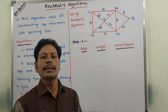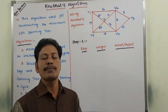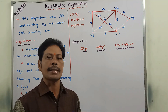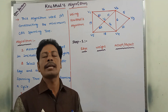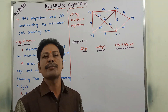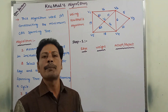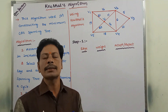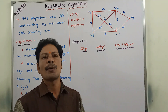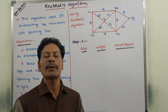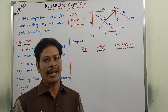Generally, there are two algorithms used for constructing the minimum cost spanning tree. The first one is Kruskal's algorithm. The second one is Prim's algorithm. Using these two algorithms, we have to construct the minimum cost spanning tree.